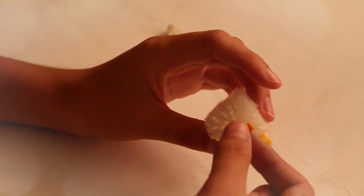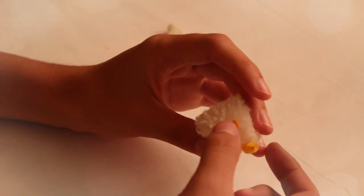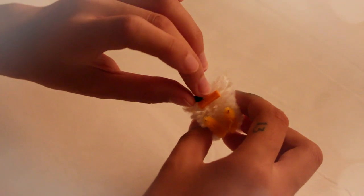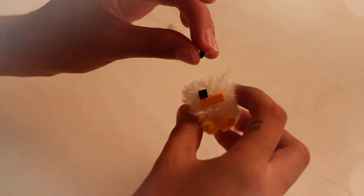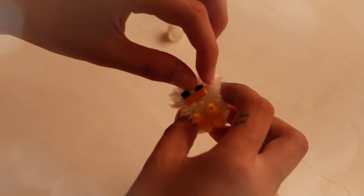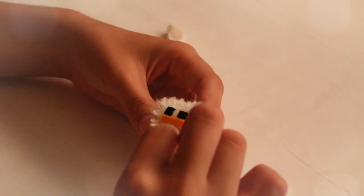On the front side of the cube, glue the beak on first. Then glue on the eyes above the beak. And finally glue on the red rectangle below the beak in the center.